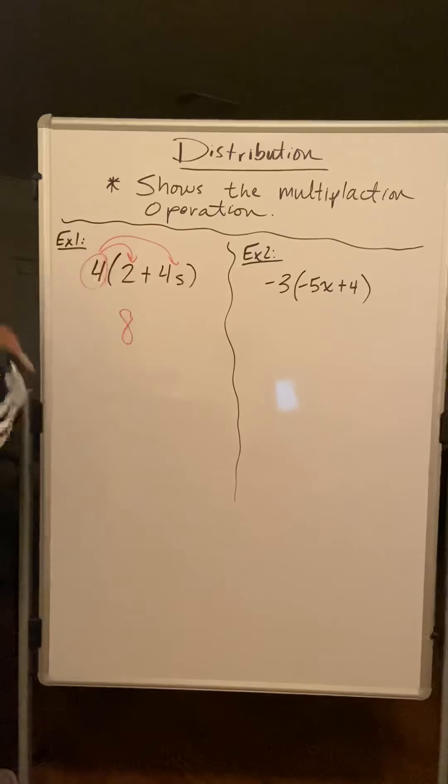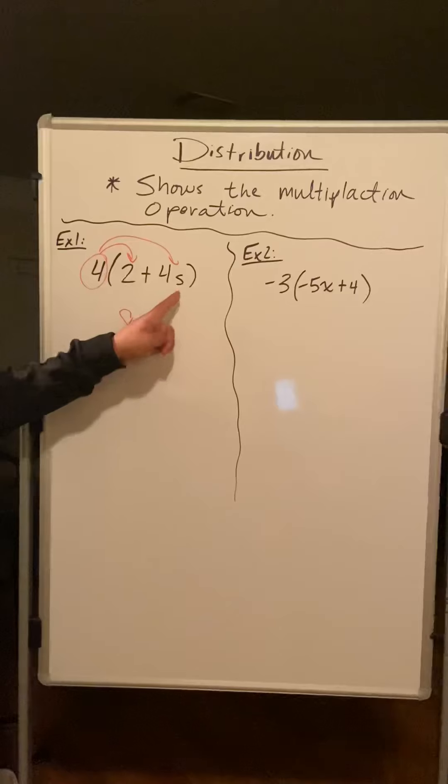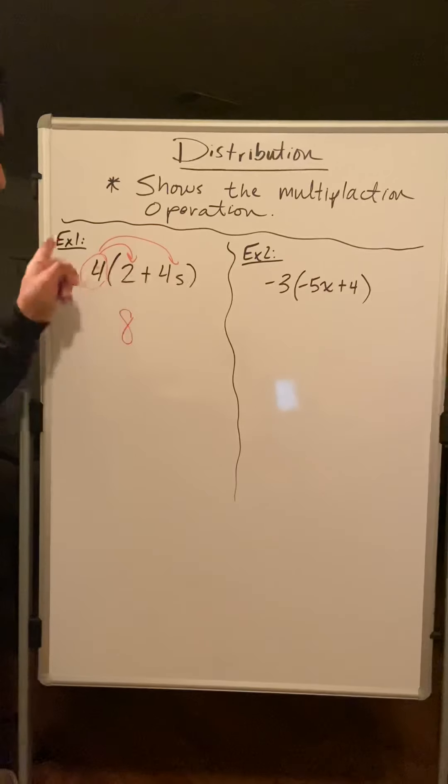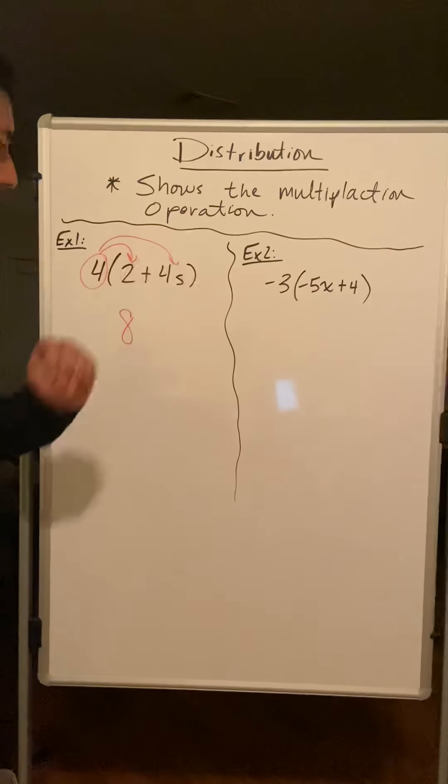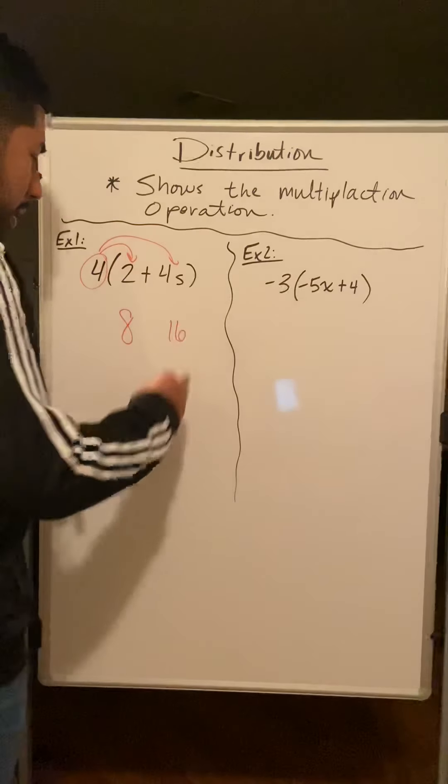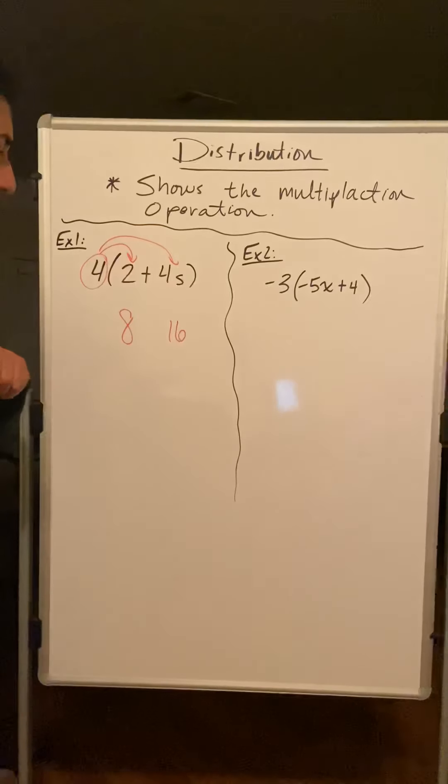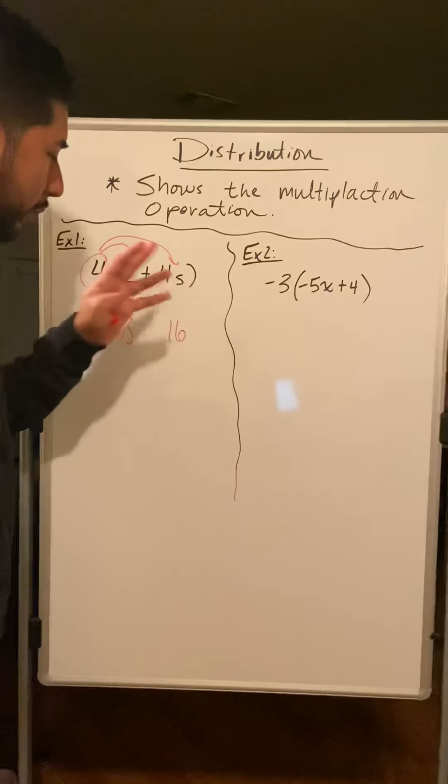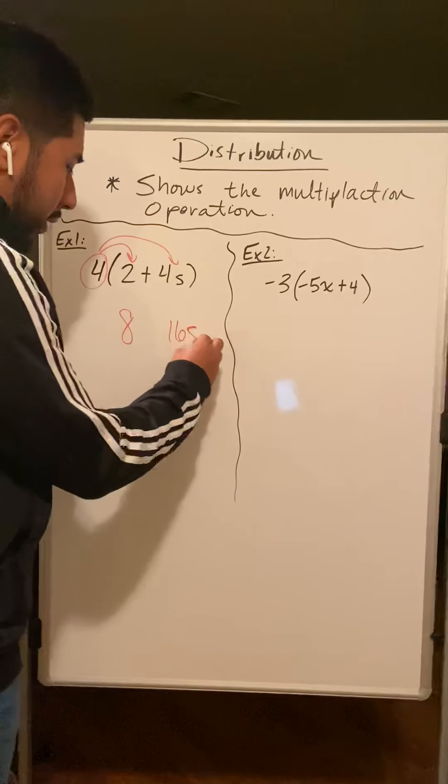Four times four s. Now remember, when I multiply these two, I know four times four. Hopefully I know, or not, use the calculator. Four times four is 16. Do I carry that s with the 16? Yes I must. It's part of that four, so it needs to be part of that 16.